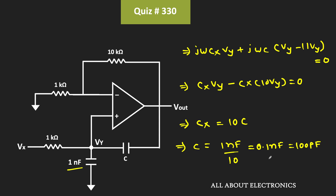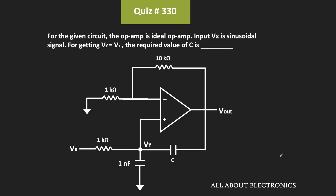That means to get Vx equal to Vy, the value of C should be equal to 0.1 nanofarad. And hence, for the given question, the value of C is equal to 0.1 nanofarad.